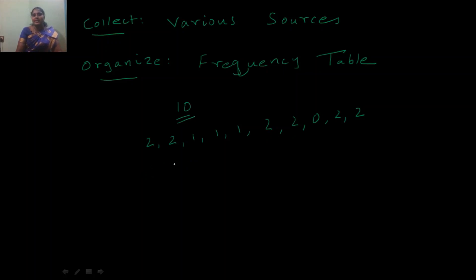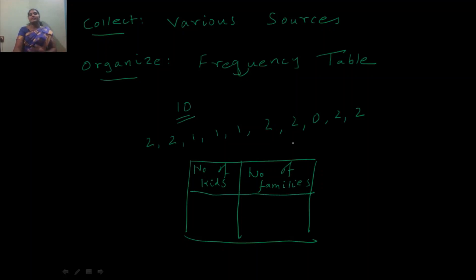Once the data has to be collected, it has to be organized into a frequency table. For that, let me first construct a frequency table with two columns, whereas the first column represents number of kids and the second column represents number of families. So number of kids in a data set is 0, 1 and 2. So let me take it as an ascending order. So I have to write 0 first, 1 next and 2 last.